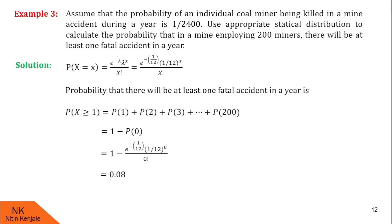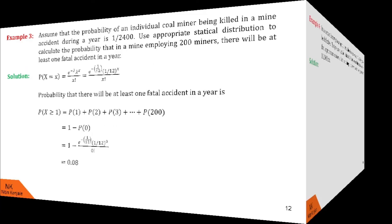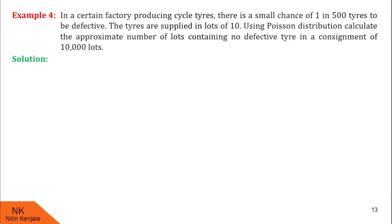So the probability that there will be at least one fatal accident in a year is 0.08. I hope you understood this solution. Now let us go for the next interesting example. Here, in a certain factory producing cycle tires, there is a small chance of 1 in 500 tires to be defective. The tires are supplied in lots of 10. Using Poisson distribution, we are asked to calculate the approximate number of lots containing no defective tire in a consignment of 10,000 lots.